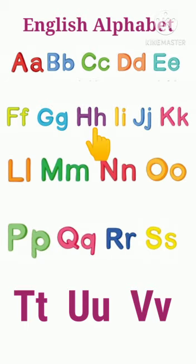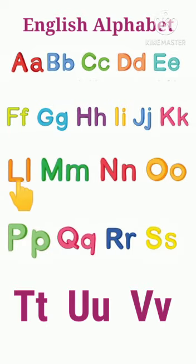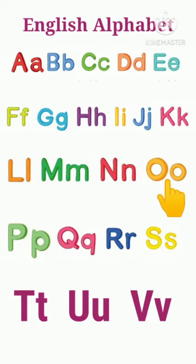Capital F, small f, f. Capital G, small g, g. Capital H, small h, h. Capital I, small i, e. Capital J, small j, j. Capital K, small k, k. Capital L, small l, l. Capital M, small m, m. Capital N, small n, n. Capital O, small o, o.